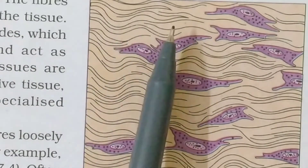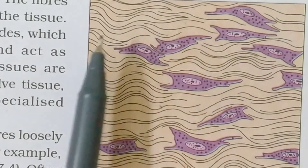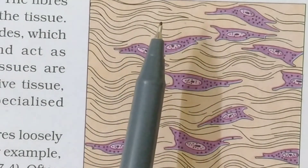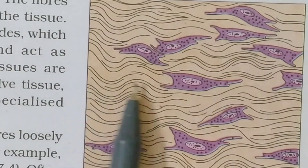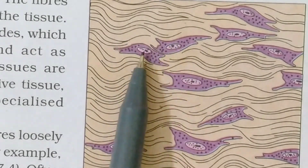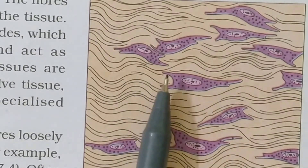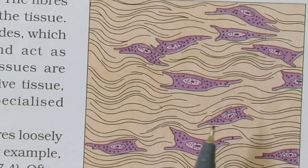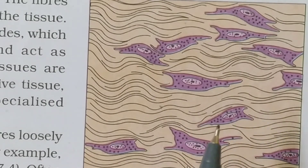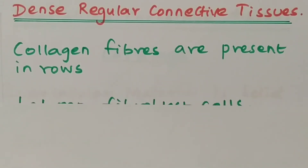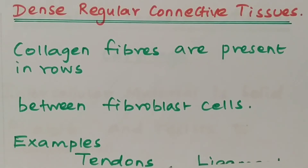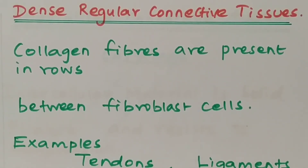These are pictures of dense regular connective tissues. The collagen fibers are arranged in rows in a regular manner — that's why it is called dense regular connective tissue. In between the rows of fibers, the fibroblast cells are arranged. The examples of dense regular connective tissues are tendon and ligament. Tendon is a connective tissue which connects muscle to bone; ligament is a connective tissue which connects bone to bone.